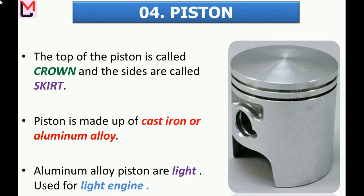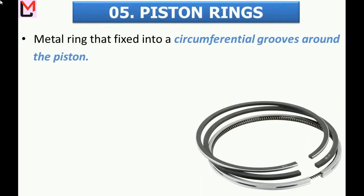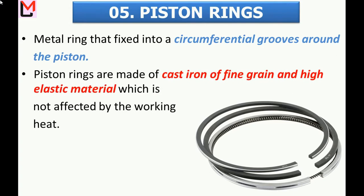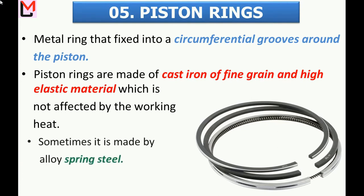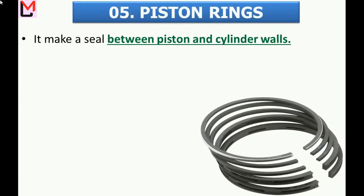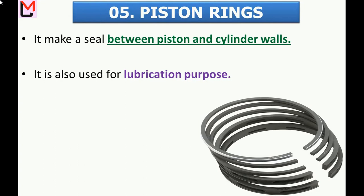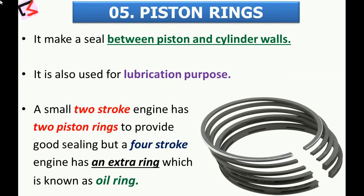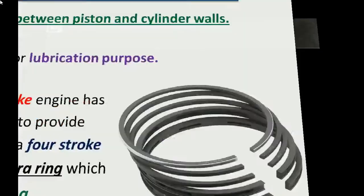Now we will learn about piston rings. These are metal rings fixed into circumferential grooves around the piston. Piston rings are made of fine-grain, high-elastic cast iron material which is not affected by working heat; sometimes they are made of alloy spring steel. They make a seal between the piston and cylinder walls and are also used for lubrication purposes. A small two-stroke engine has two piston rings to provide good sealing, but a four-stroke engine has an extra ring known as the oil ring. Remaining parts will be discussed in part two.